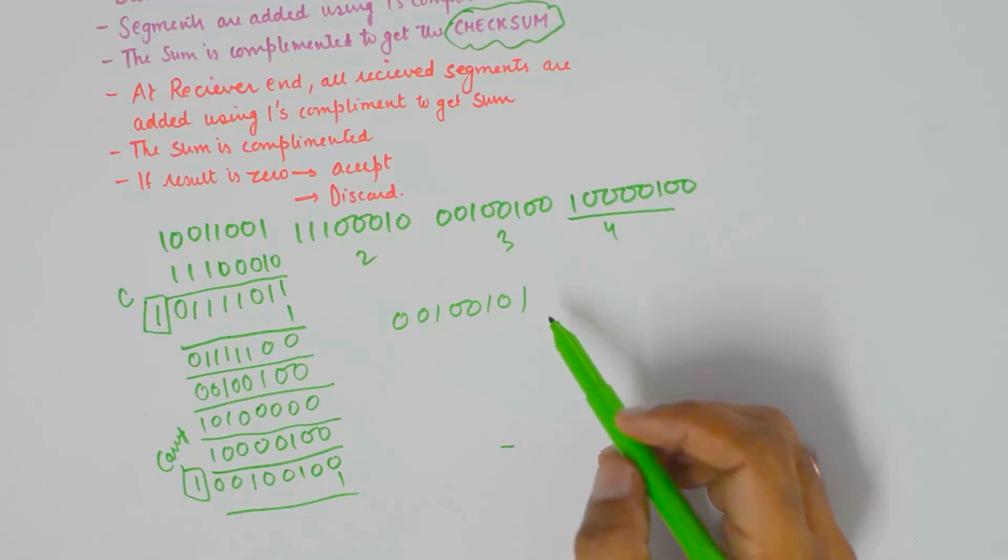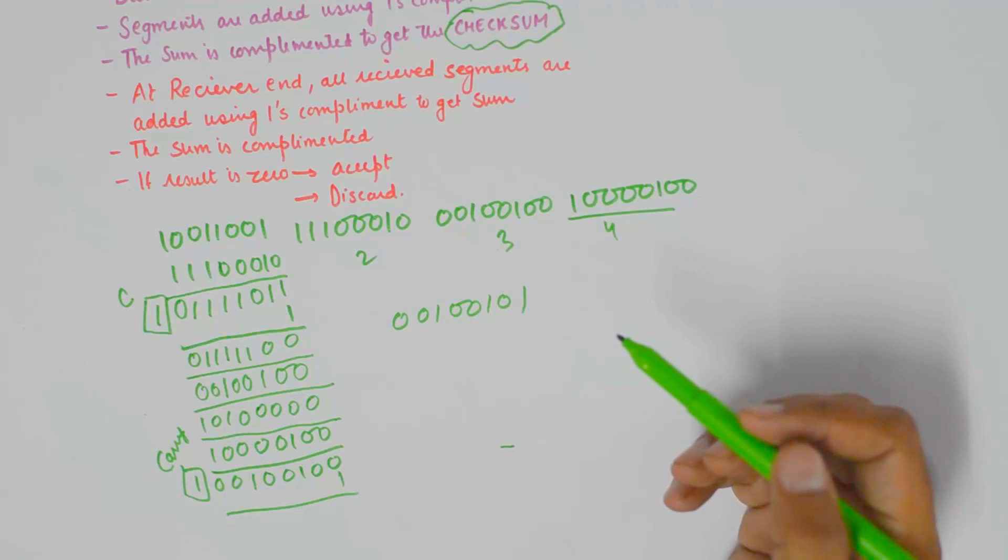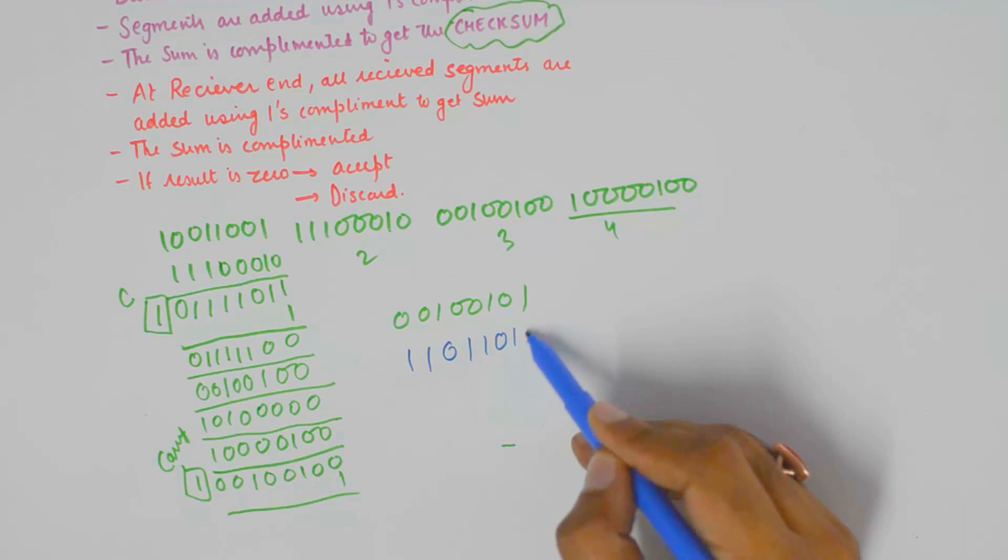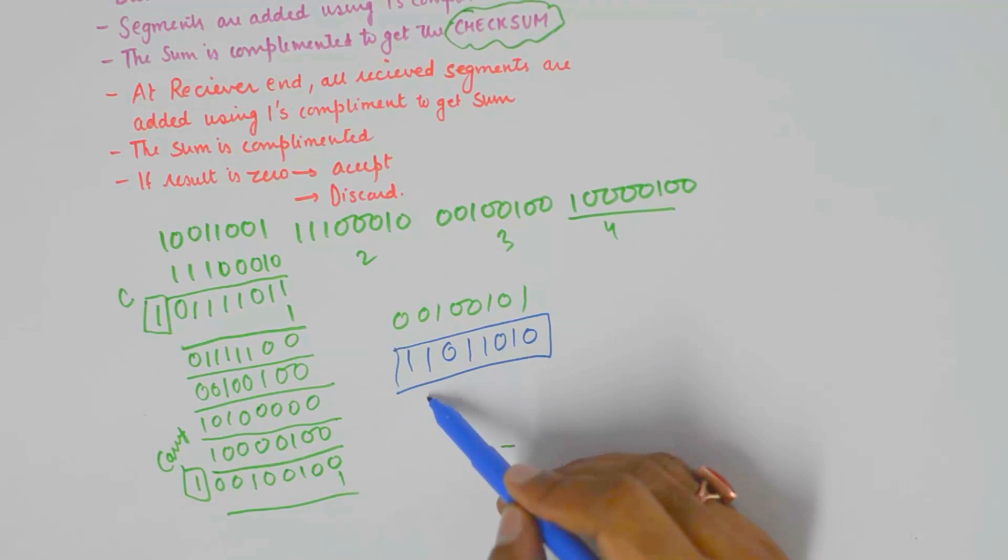And then, I will do a 1's complement of this. And doing the 1's complement of this would give me 11011011. And this becomes my checksum.